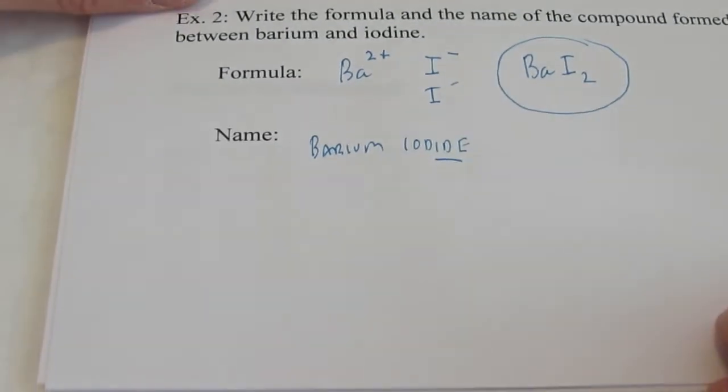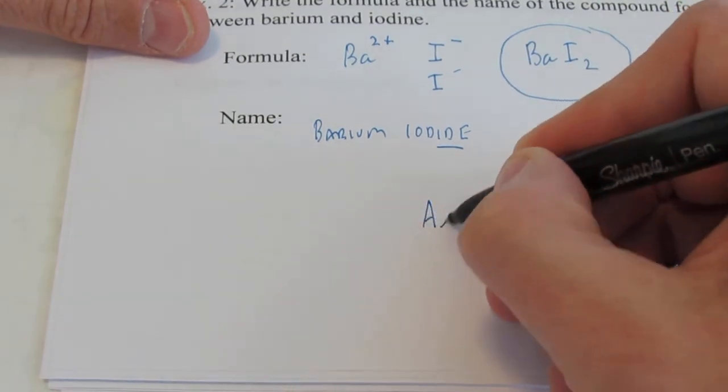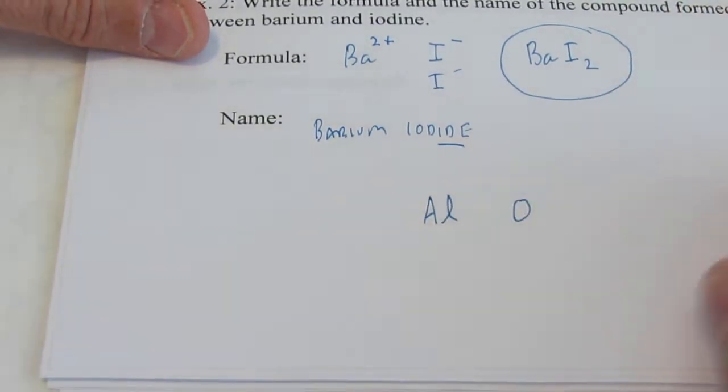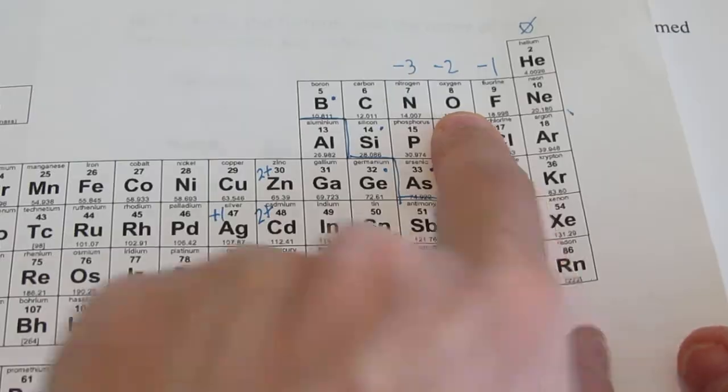Let's do one more before we go on to the next page. What if I wanted to have the formula between aluminum and oxygen? So aluminum is a metal. It's on the left side of that line. Oxygen is a non-metal. It's on the right side of that line.